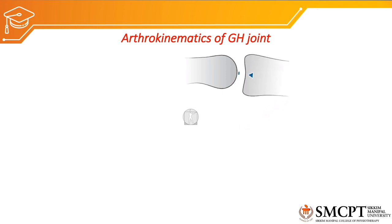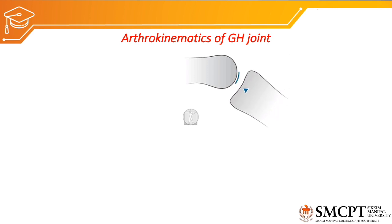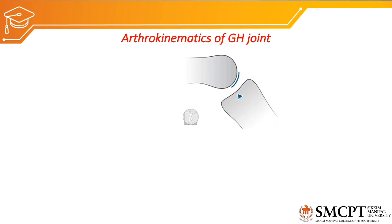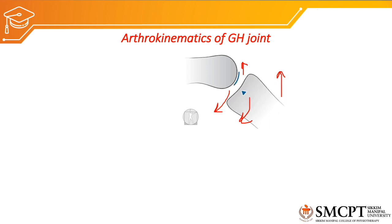Before discussing arthrokinematics, we need to understand the concave-convex rule. When the concave surface moves on a convex surface, the sliding will be towards the same direction as the movement of the bone. As shown in this animation, when the bone is moving downward, sliding is also downward; when the bone is moving upward, sliding is also upward. So sliding is always in the same direction as the movement of the bone when a concave surface moves on a convex surface.